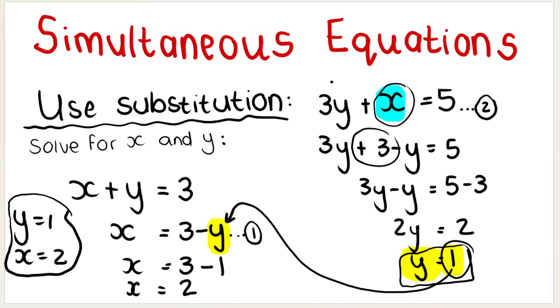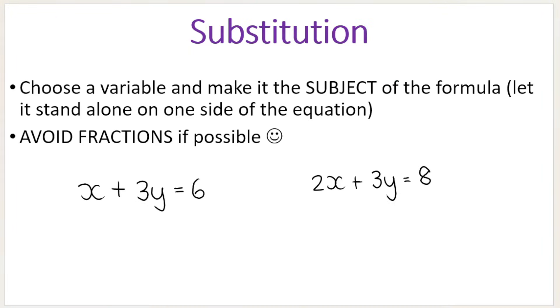When you do substitution, remember I said your first step is to isolate a variable. So if you take a look at this example, choose a variable and make it the subject of the formula. Isolate it, let it stand alone on one side of the equation. Which variable would be the smartest one to isolate?